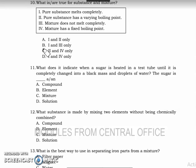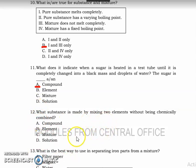Number eleven: the answer is letter — one and three. Number twelve: what substance is made by mixing two elements without being chemically combined? The answer is of course a mixture.